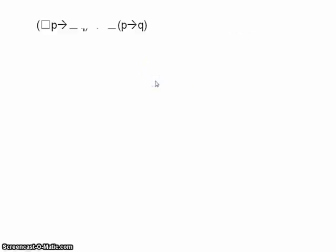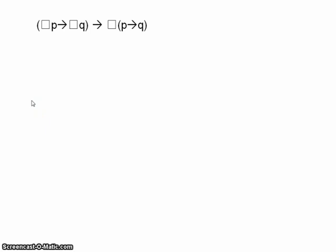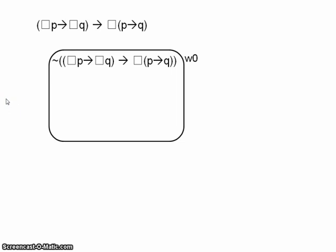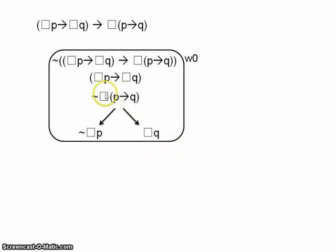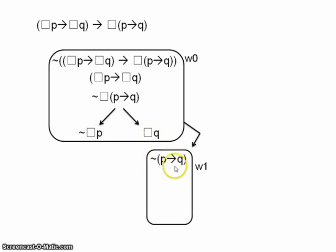The argument is: if necessarily P then necessarily Q, therefore necessarily if P then Q. We assume its negation — a false conditional — giving a true antecedent and a false consequent. It's a good idea to apply all propositional rules first. So we branch this conditional, giving either not-necessarily-P or necessarily-Q. Focusing on the right branch: we use 'not necessarily if P then Q' to open a new world, derive 'not if P then Q', which as a false conditional gives us P and not-Q. But from 'necessarily Q' we can derive Q in w1, which contradicts not-Q, so the world closes and the whole branch closes.